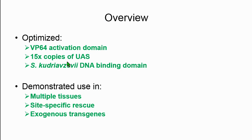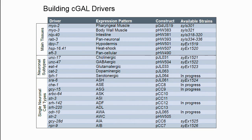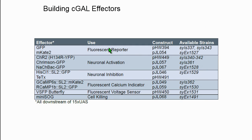To summarize, we've optimized several factors of our GAL4 UAS system and demonstrated its use in reporting in multiple tissues, site-specific rescue, and driving of transgenes. We've developed a system that should be robust for many experiments. Our lab is actively building drivers covering many main tissues, some neuronal subtypes, and single cell types. We have a variety of effectors: fluorescent reporters, cell killing, neuronal activation and inhibition, and calcium reporters. We're looking toward cell biological effectors and eventually a cDNA collection.